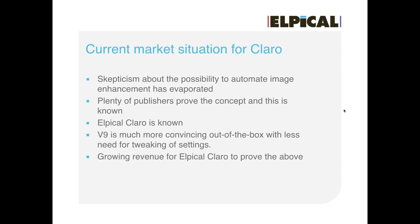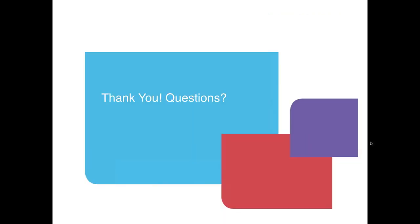In conclusion, skepticism about the possibility of automatic image optimization has evaporated. Originally there was quite some skepticism about whether correcting images automatically was possible at all, but plenty of publishers have proven this concept works. Claro is known as a brand and fierce competitor in this specific segment. Since version 9, we've seen much more convincing out-of-the-box quality without much tweaking of the settings.